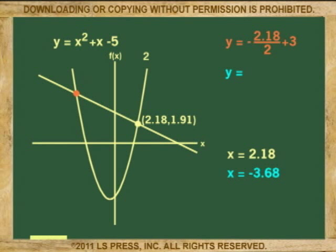Now to find the second value of y. When x is -3.68, negative times negative is positive, so 3.68 divided by 2 equals 1.84, plus 3 equals 4.84. The second set of coordinates is (-3.68, 4.84).